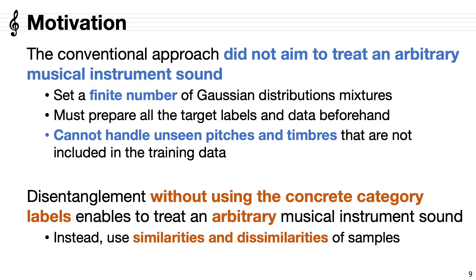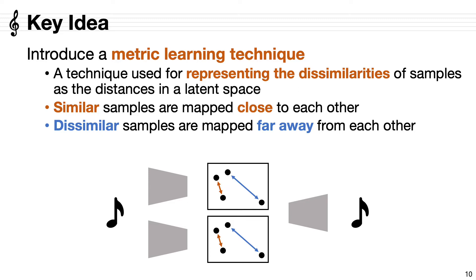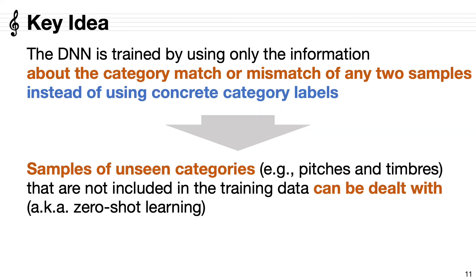This motivates us to develop a disentanglement method without using concrete category labels to treat an arbitrary musical instrument sound. Instead of the labels, we use similarities and dissimilarities of samples. For this purpose, we introduce a metric learning technique which is used for representing the dissimilarities of samples as distances in latent space. We map similar samples close to each other and dissimilar samples far away from each other in each space. Thanks to this metric learning technique, the DNN is trained by using only the information about the category match or mismatch of any two samples instead of using concrete category labels. This means that samples of unseen categories — pitches and timbres — that are not included in the training data can be dealt with. Such a learning technique is also known as zero-shot learning.